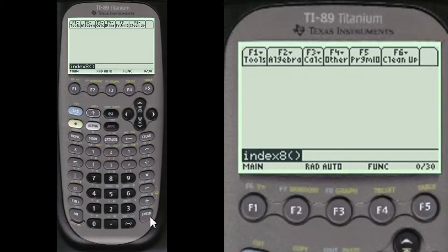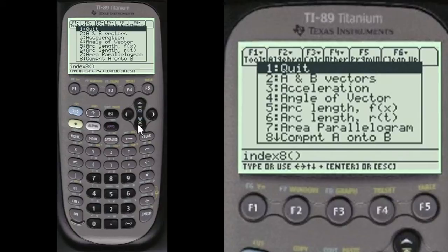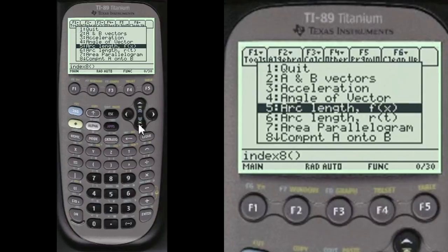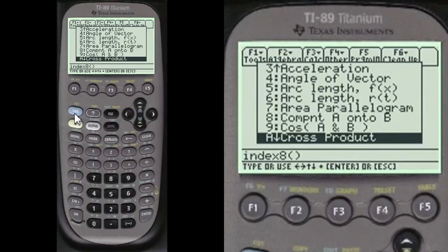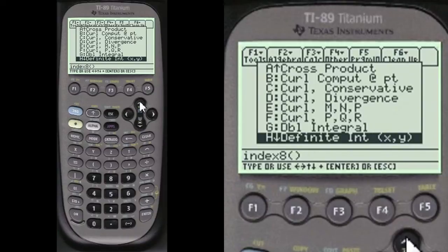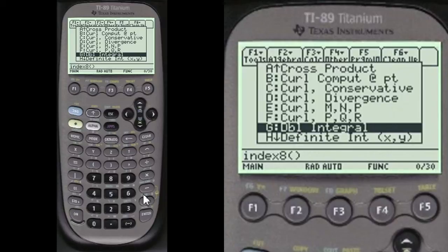Index 8 to get to my menu. We're going to scroll down to the D section. You can use the second and then the arrow to go quicker screen by screen. But there's double integral right there.